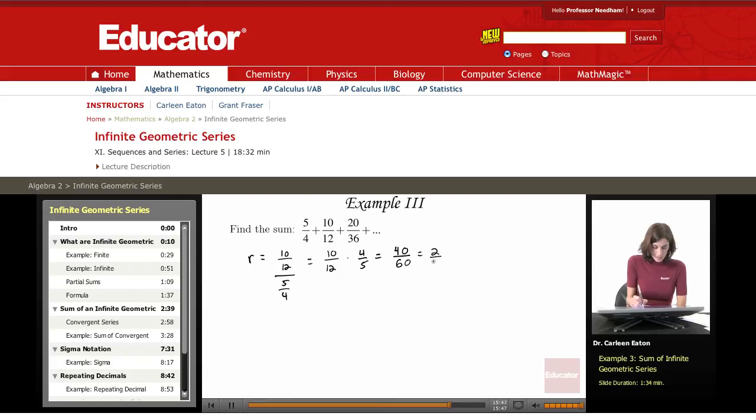So this is going to give me 2 thirds. And since 2 thirds is less than 1, I can find the sum of the series using my formula for the sum of an infinite geometric series.